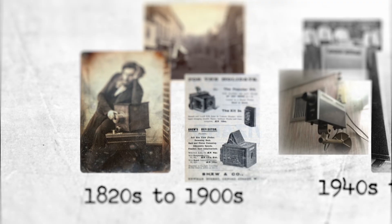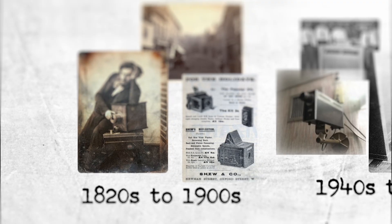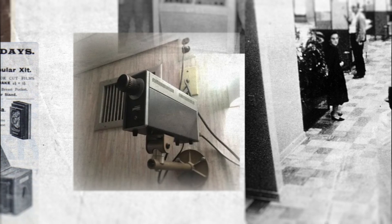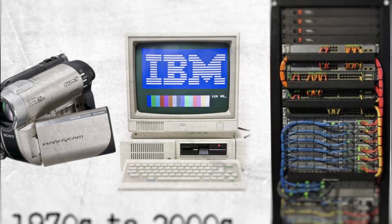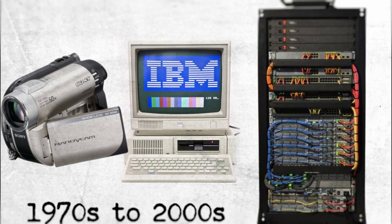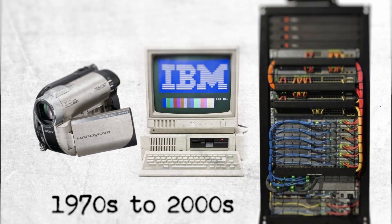Modern surveillance began with the advent of photography in the 19th century. This progressed to the use of closed-circuit television, or CCTV, cameras in the mid-20th century, initially to monitor public spaces and prevent crime. With the digital revolution, surveillance took a significant leap. Digital cameras, online tracking, and electronic databases emerged, which allowed for the collection and storage of vast amounts of personal data.